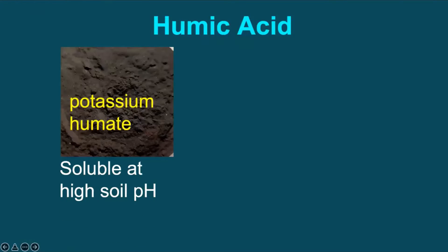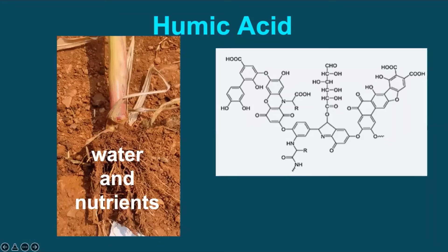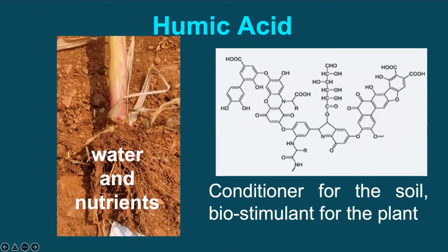Humic acid is a dark brown humic substance soluble in water even at higher soil pH. It is a group of molecules that help plant roots receive more water and nutrients. It acts as a conditioner for the soil and as a biocatalyst or bio-stimulant for the plants. It can increase crop yield, while its deficiency may result in heavy yield losses.